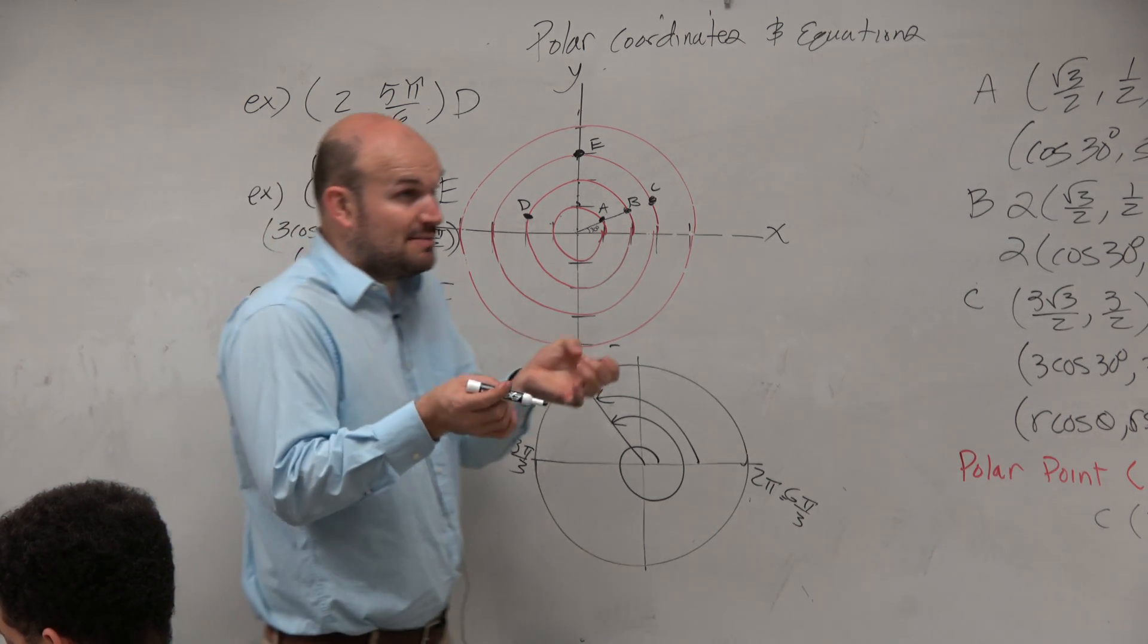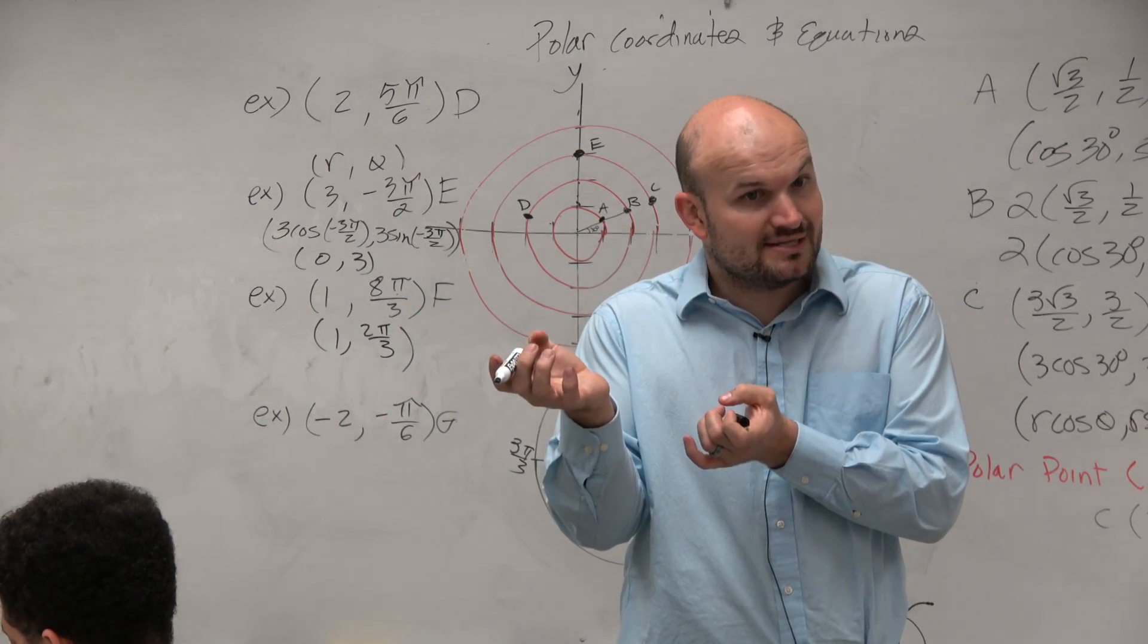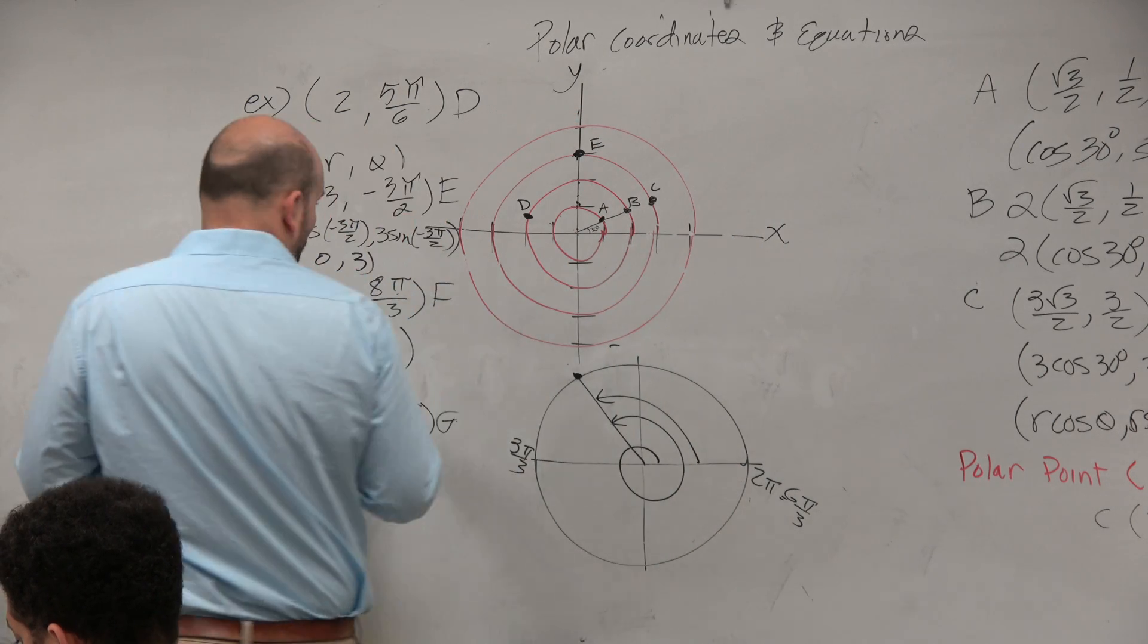Right? So if you use the same radius and just coterminal angles, you can represent it in different ways. That's going to be important in this next example I do.